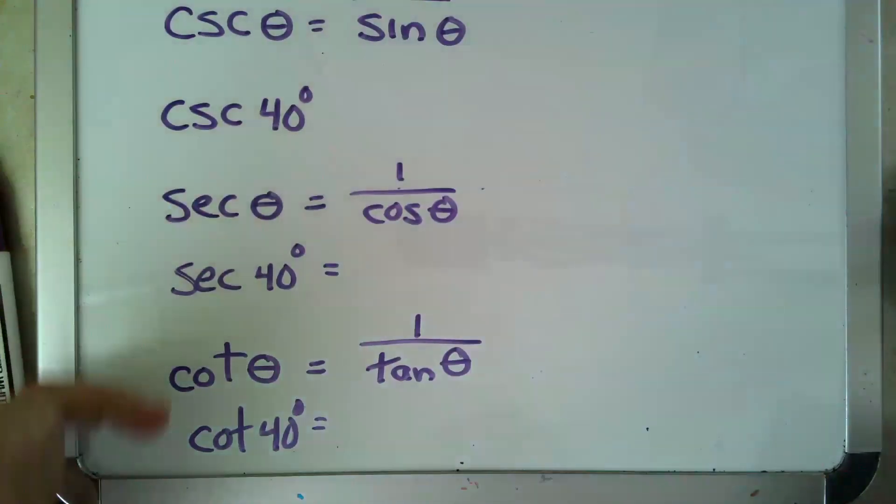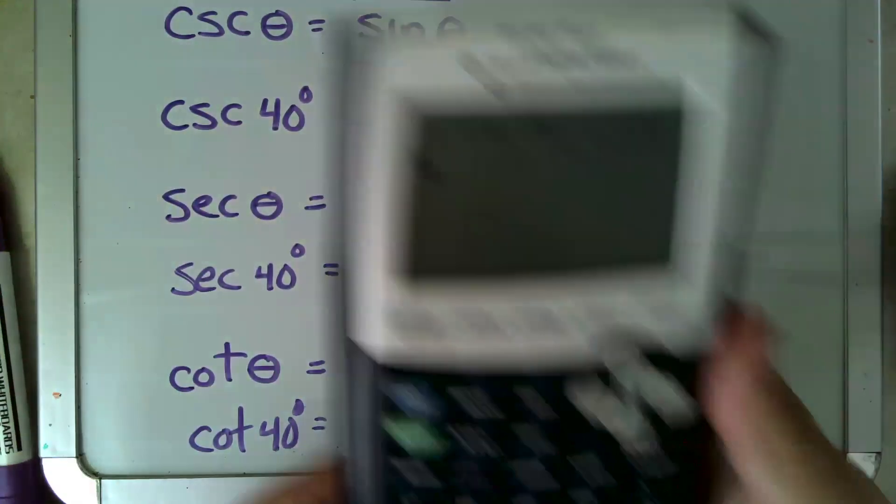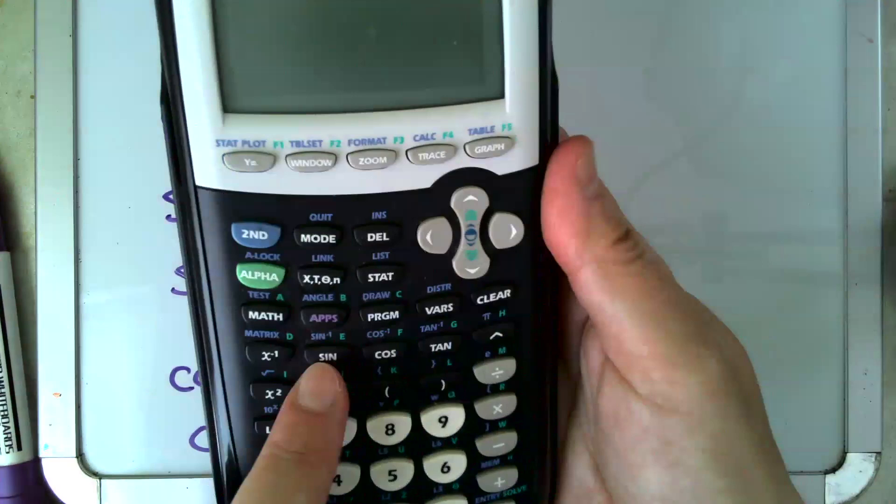There's your cosecant, secant, and cotangent buttons hiding out as 1 over sine, 1 over cosine, 1 over tan. All right.